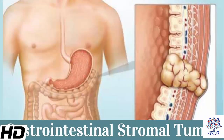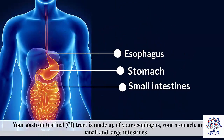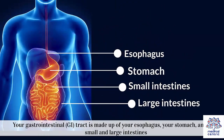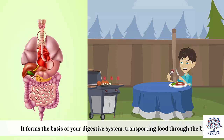What you need to know about GIST. Your gastrointestinal or GI tract is made up of your esophagus, your stomach, and your small and large intestines. It forms the basis of your digestive system – transporting food through the body,